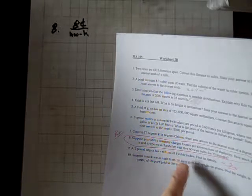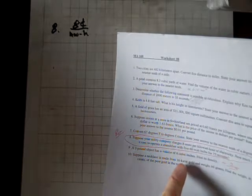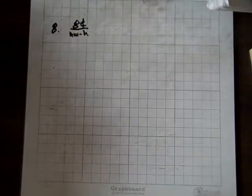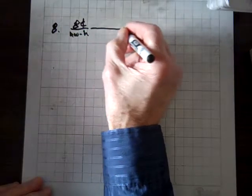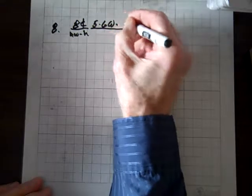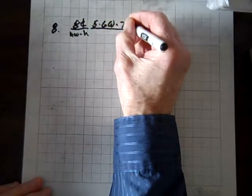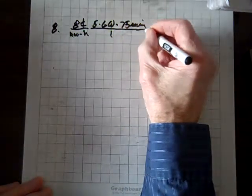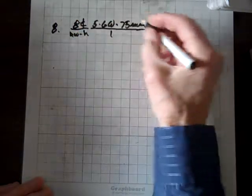For question 8, suppose your utility company charges 8 cents per kilowatt hour of electricity. How much does it cost to operate a chandelier with five 60 watt bulbs for 75 minutes? So we have 5 times 60 watts times 75 minutes over 1, and we need to get rid of all the units but cents.